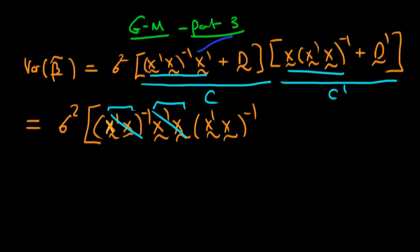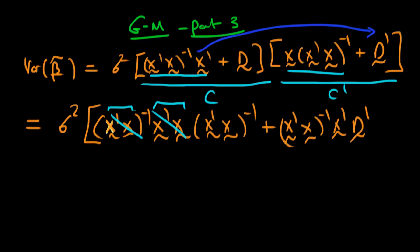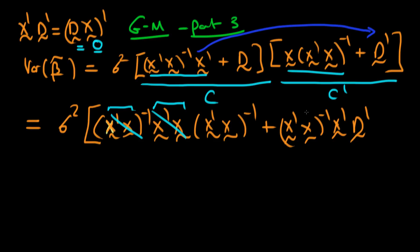The second term is going to be equal to this first term times D transposed, which is x primed x to the power minus 1 times x primed times D transposed. We can simplify this because x transposed times D transposed is actually equal to DX all transposed, because when I take the transpose of a product then the order of multiplication inverts. And we can recognise this term because in order for our new estimator beta tilde to be unbiased, DX had to be equal to 0. So in fact we've just got 0 for the second term, so this whole thing disappears.